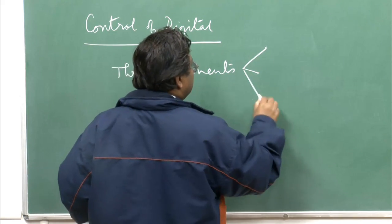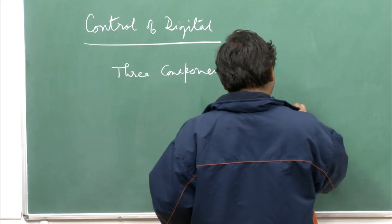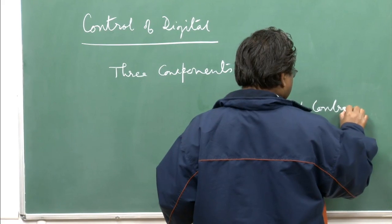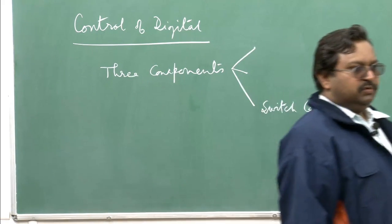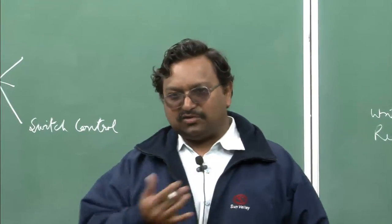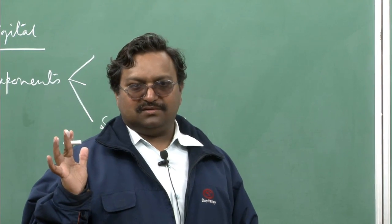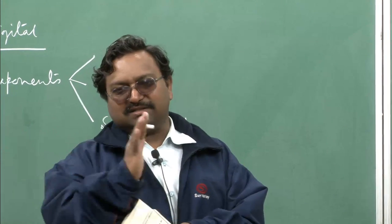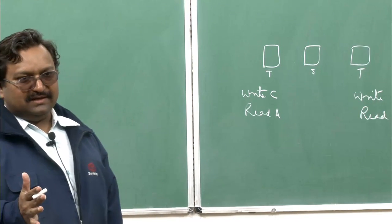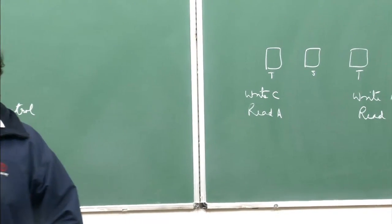The first component is the switch itself. For a time switch, there is a control memory — how you write into that, how it is being read out — that is the control interface. Whatever is the bus — data bus, address bus — everything which goes into control memory, that is your interface. That is the switch control, which we have already talked about while looking at the implementation.